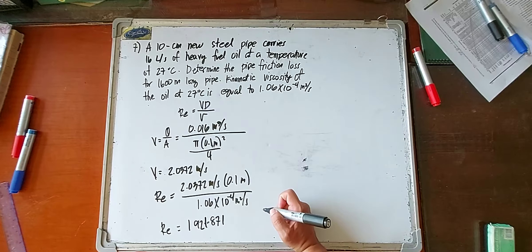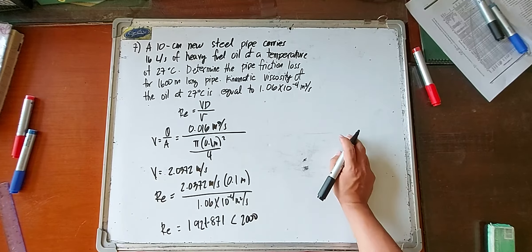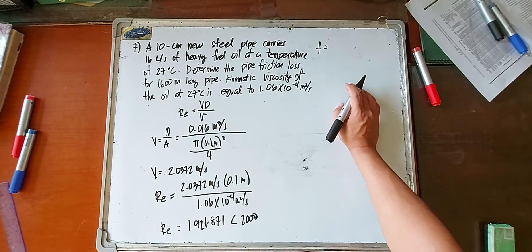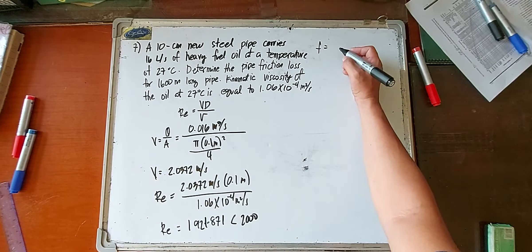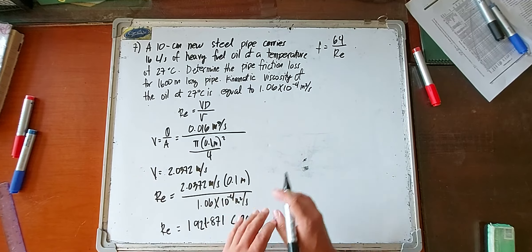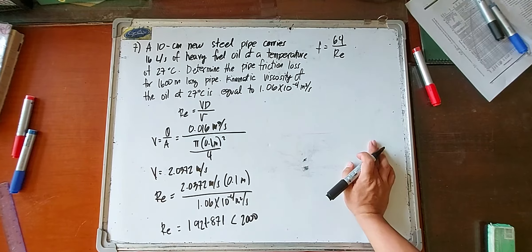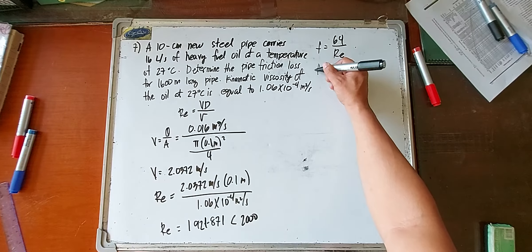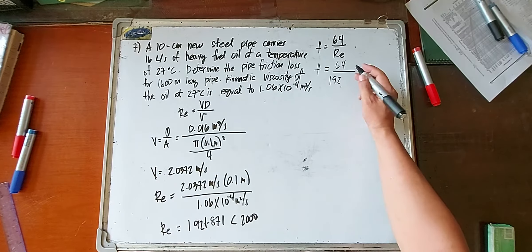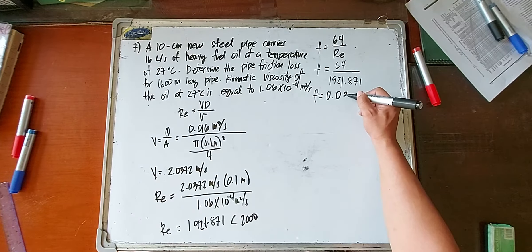The flow is laminar since the Reynolds number is less than 2,000. For laminar flow, the friction factor is: f = 64 / Re. So f = 64 / 1,921.871, giving a friction factor of 0.0333. There is also an equivalent formula for turbulent flow when the Reynolds number is from 3,000 to 10,000, but in this case we use the laminar formula.